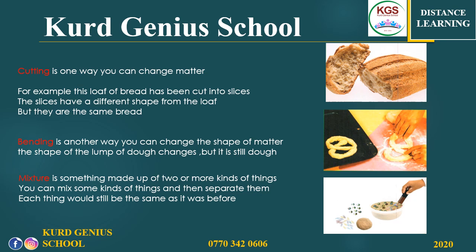Cutting: when you have a loaf of bread, you bring a knife and cut it into slices. The slices have a different shape from the loaf, but they are still the same bread — no matter if you have a small slice or a big one, they all come from the loaf. Bending is another way to change the shape of matter. For example, when you have dough and your mom makes a circle but you want to make a heart shape — whatever shape you make, it is still the dough, because any shape you form from the dough does not change what it is.